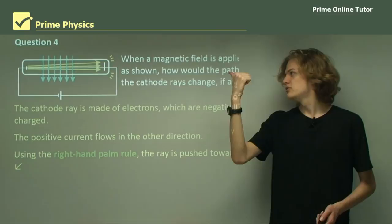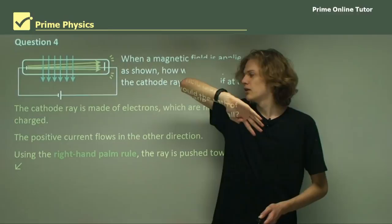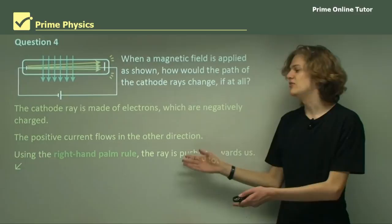Using the right-hand rule, we can use the fingers to represent the magnetic field, which must be moving downwards. And if the cathodes are moving in this direction, the force must be towards you. And we find that this is indeed the answer.